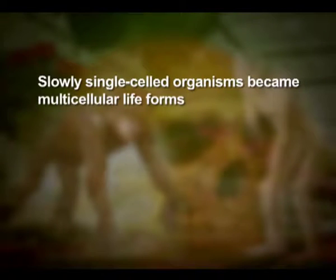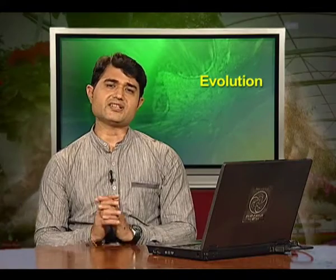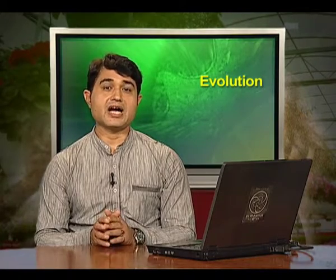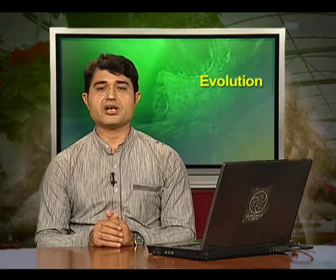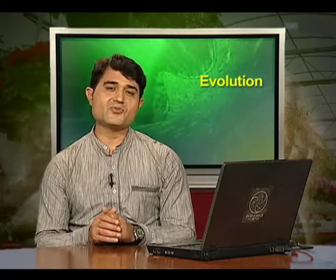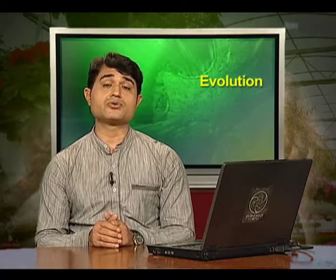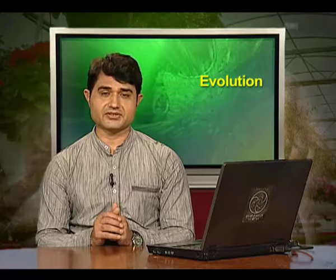Slowly, single-cell organisms became multicellular life forms. By that time, 500 million years ago, invertebrates were formed and active. Jawless fish probably evolved around 350 million years ago. Seaweeds and a few plants existed probably around 320 million years ago.